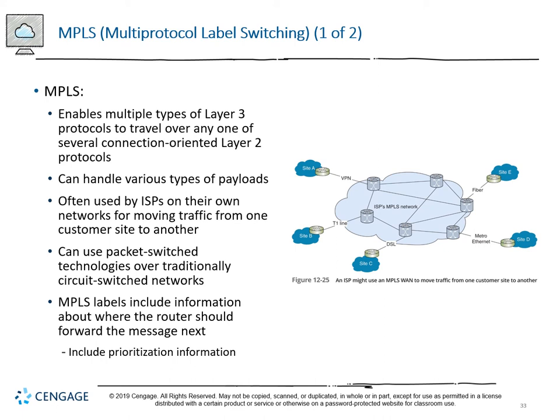MPLS, multi-protocol label switching, enables multiple types of layer 3 protocols to travel over any one of several connection-oriented layer 2 protocols - it can handle a ton of different payload types. It's often used by ISPs on their own networks for moving traffic from a customer site to another, and we can use packet-switched technologies over traditionally circuit-switched networks. MPLS labels tell us where the router should forward the message next as well as prioritization information.